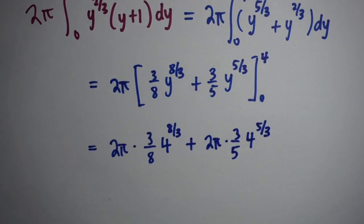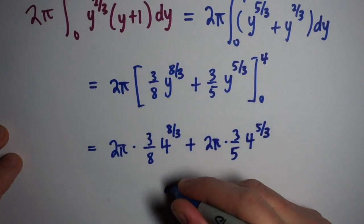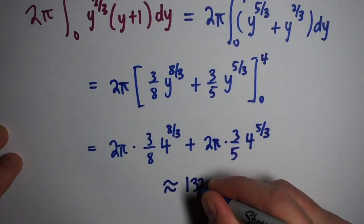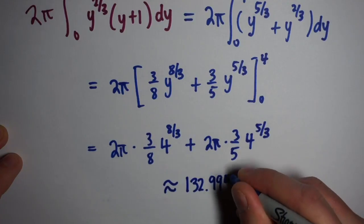That's not really a good way to simplify this meaningfully. If we want a decimal approximation to get an idea of what the answer is, you can plug this into a calculator, and you end up with approximately 132.994.